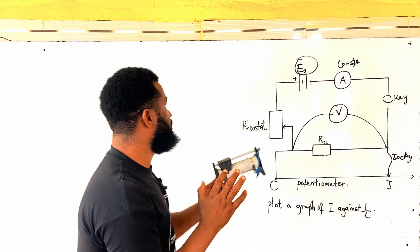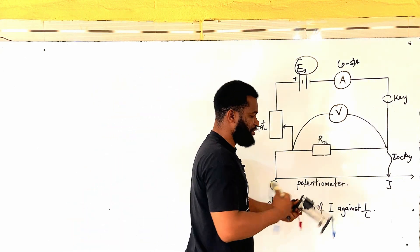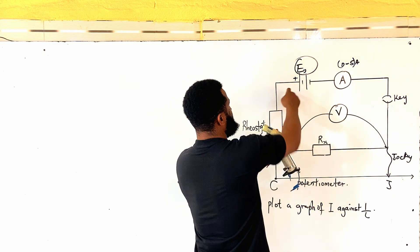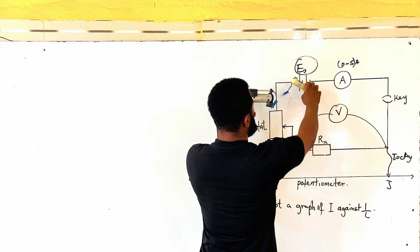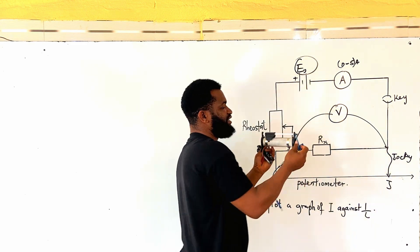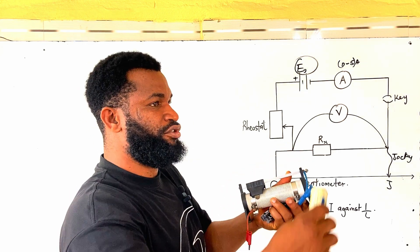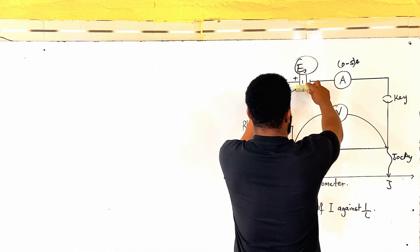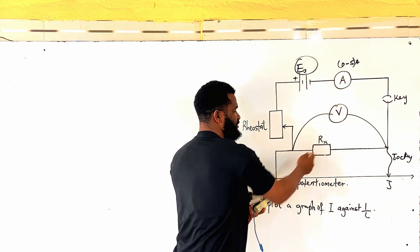But if you follow the connection very well, you will see that the battery, the positive side of the battery, this is the positive side of the battery. And this positive side of the battery is going to this place, you are connecting it exactly into this rheostat, like this. Then from the rheostat, you go to a resistor.